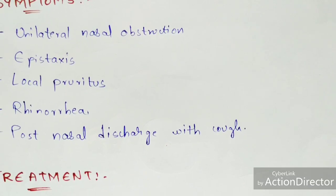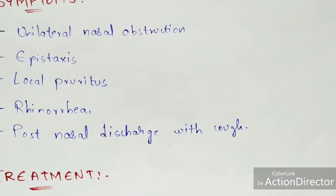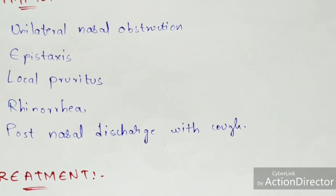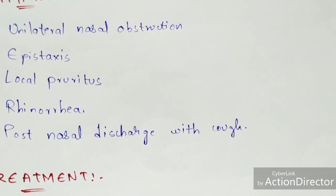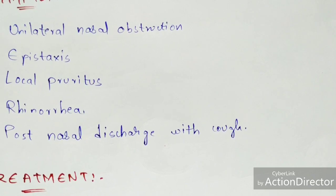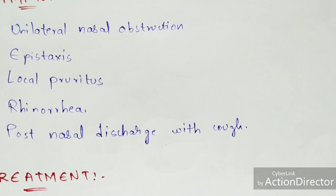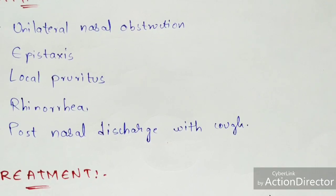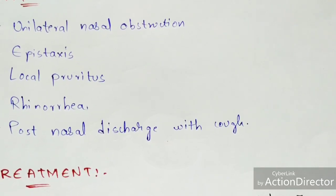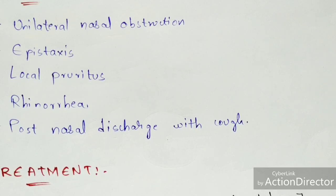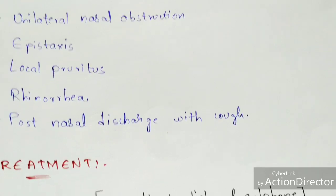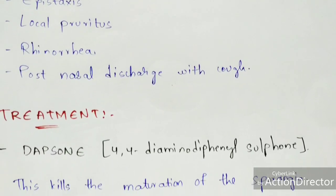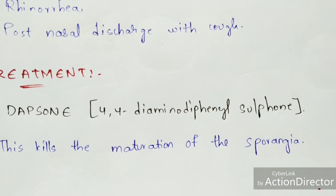The symptoms of a person infected with rhinosporidiasis are: first, unilateral nasal obstruction; second, epistaxis; third, local pruritus; fourth, rhinorrhea; and fifth, post-nasal discharge with cough.